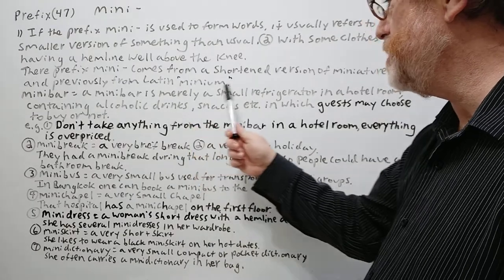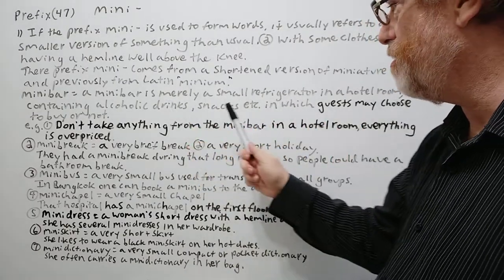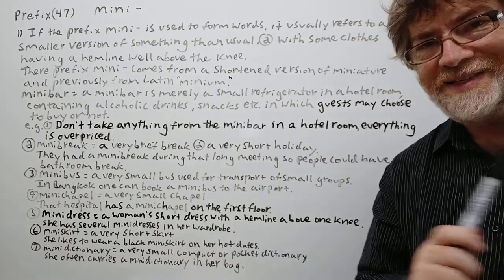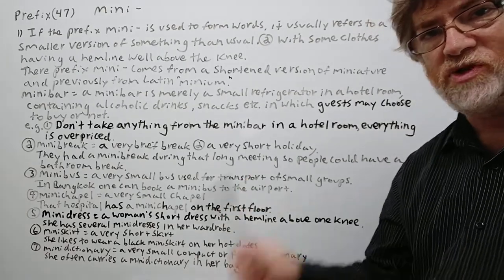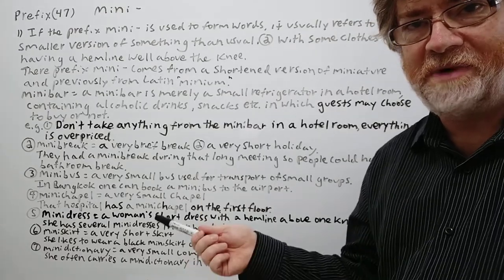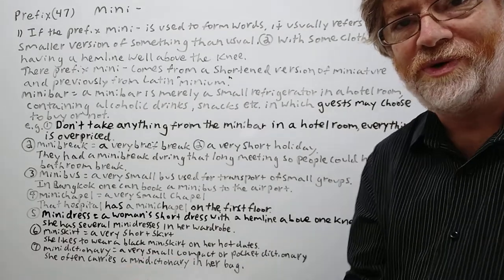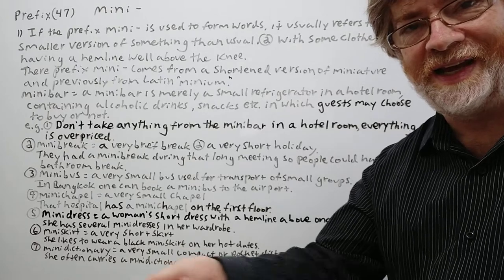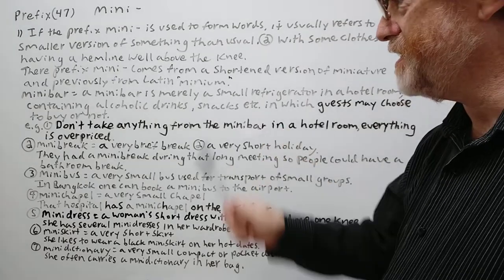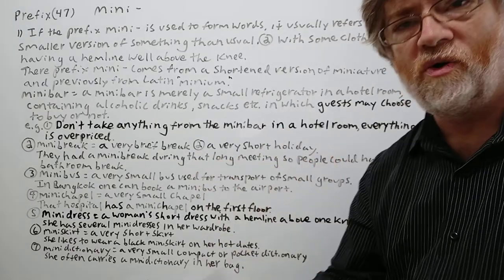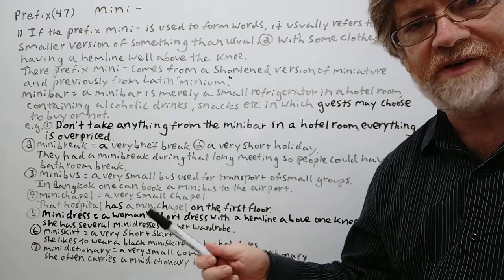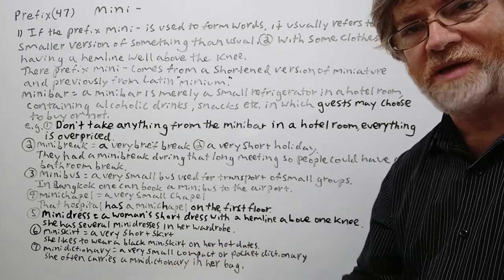A mini bar is a small refrigerator in a hotel room containing alcoholic drinks, snacks, etc., which guests can choose to buy or not. Although some hotels don't always clarify this — somebody traveling for the first time might mistake it for free food and end up with a pretty big bill. Example: Don't take anything from the mini bar in a hotel room; everything is overpriced. Realistically, walking five minutes to a convenience store would be a lot cheaper.